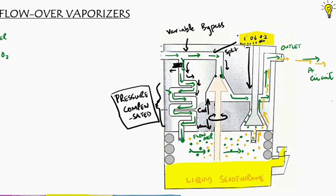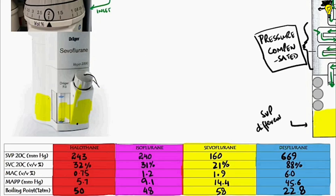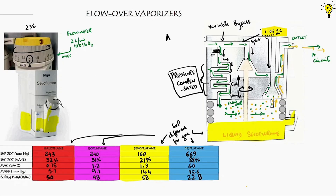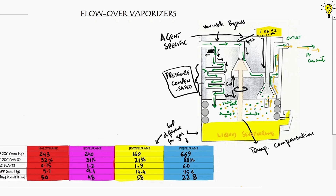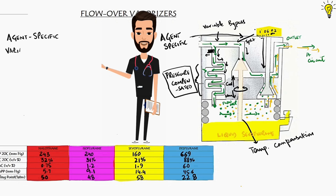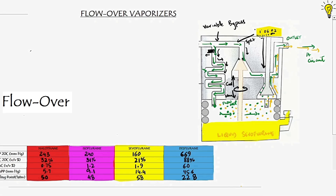The saturated vapor pressure at 20°C is different for different gases, so the amount of flow diverted by the concentration dial must also be different. Every vaporizer is therefore agent-specific. Temperature compensation is achieved by changing the bypass-to-vaporizer flow ratios. So the full name is: agent-specific, variable bypass, temperature and pressure compensated, flow-over vaporizer.